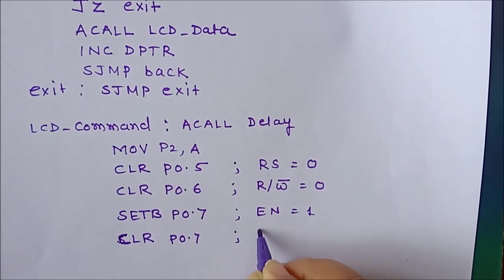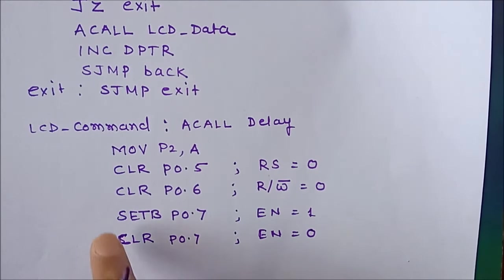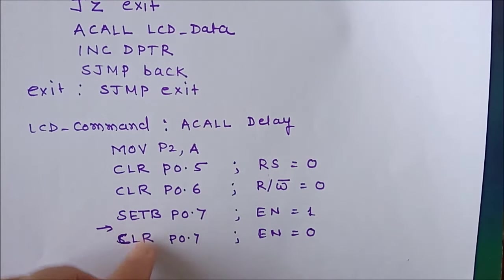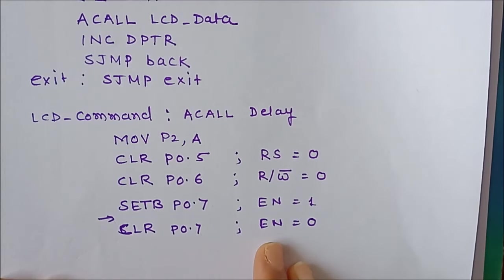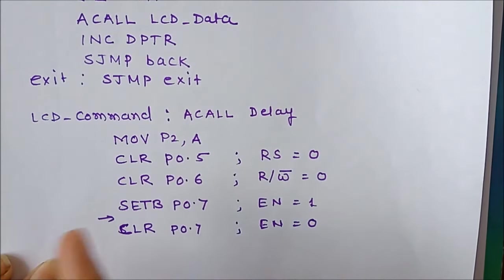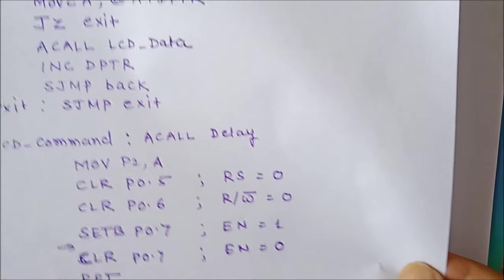The enable terminal now transitions from high to low. A delay can optionally be called between the set and clear, but it will also work without delay. After this, we return to the main program to write the next command. The last instruction of this subroutine is the RET instruction.